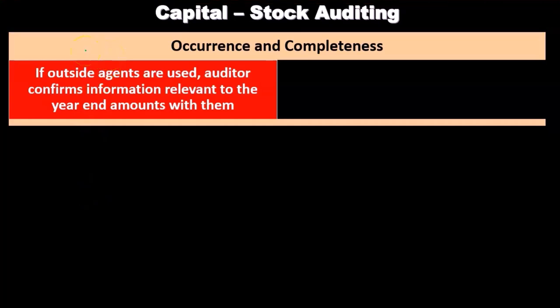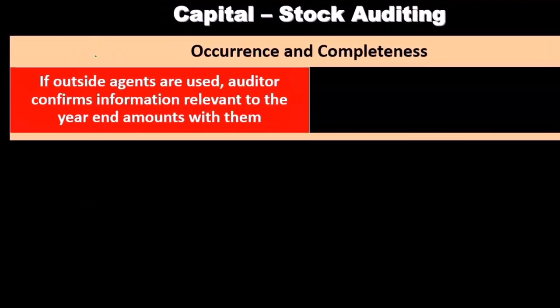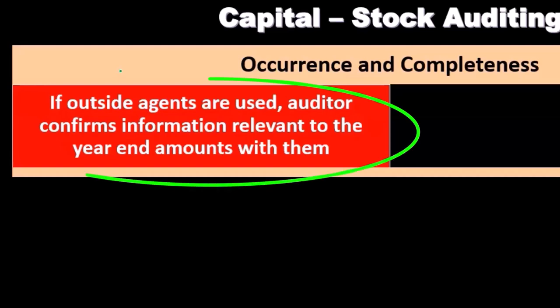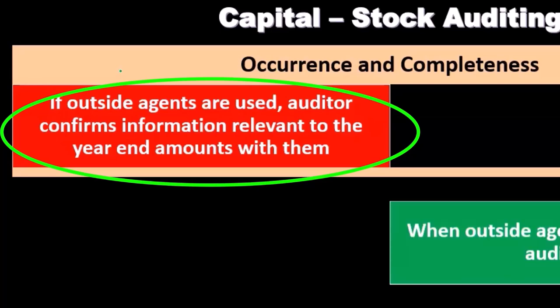If outside agents are used, the auditor confirms information relevant to the year and amounts with them. So if we have an outside agent, the auditor can go to the outside agent and confirm information relevant to the year and the amounts.